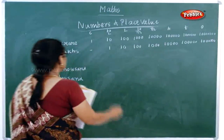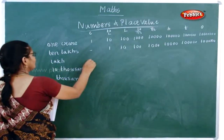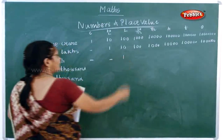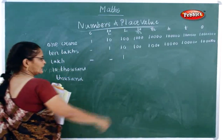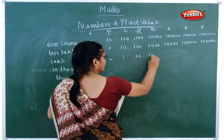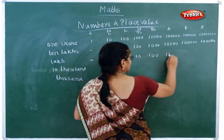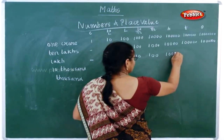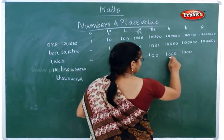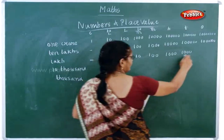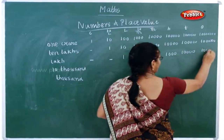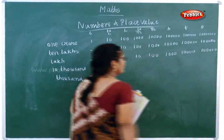Now next one here — one lakh: here it will be nothing, here it is one lakh. Then again what you will start? Ten, then one hundred, then one thousand, then ten thousand — three zeros are here. Now you will write four, then five: three, four, five.